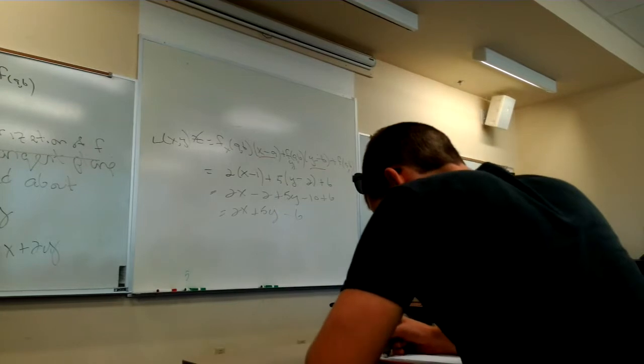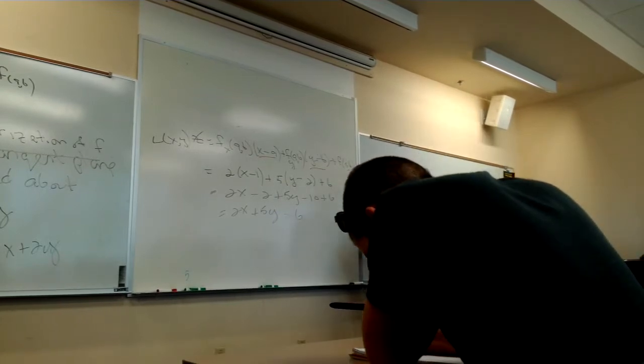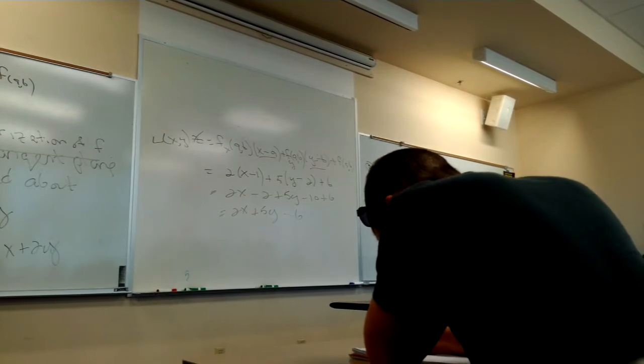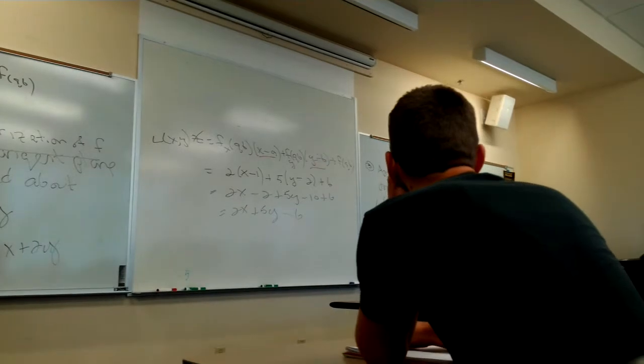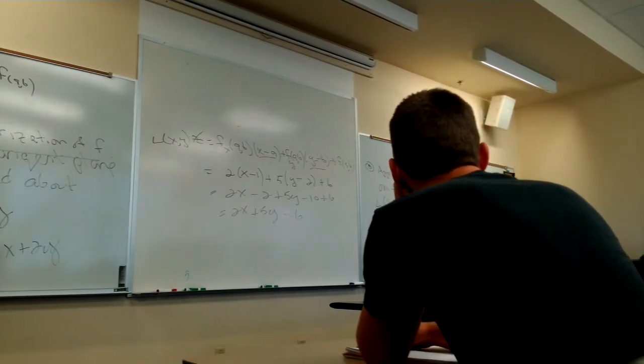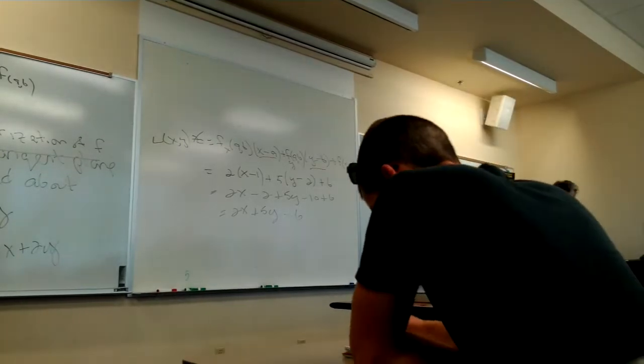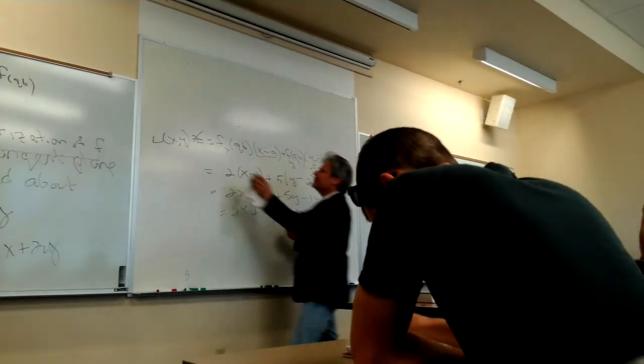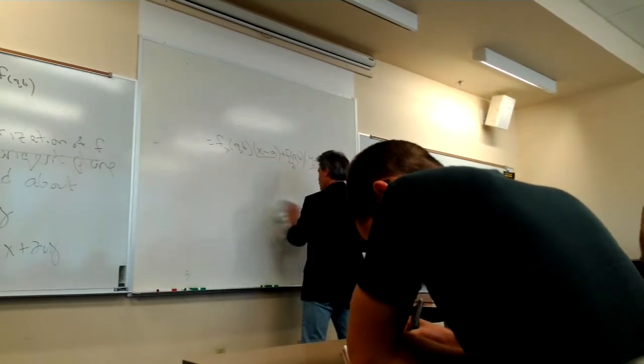So with my local linearization, 1.1 comma 1.9, if I just plug 1.1 and 1.9 for x and y here, doesn't that give me this? It gives me my 2 times my 1.1 plus my 5 times 1.9 minus my 6. So here we go. It just, again, means the surface meets the tangent plane locally speaking. That's pretty cool. I think so.